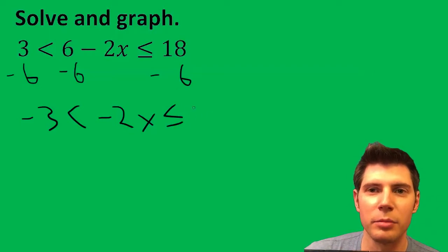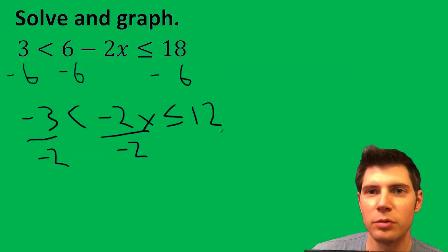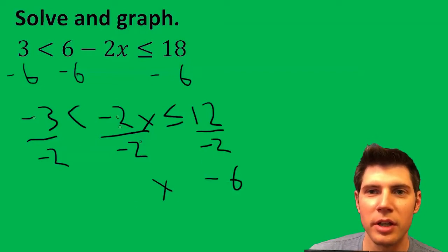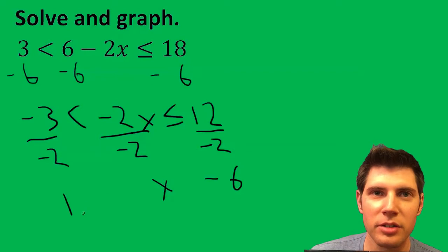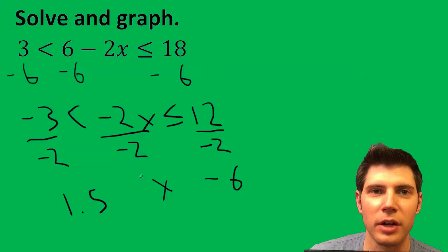Then you're going to divide everything by -2. 12 divided by -2 is -6. -2x divided by -2 is x. And -3 divided by -2 is 3/2 or 1.5.